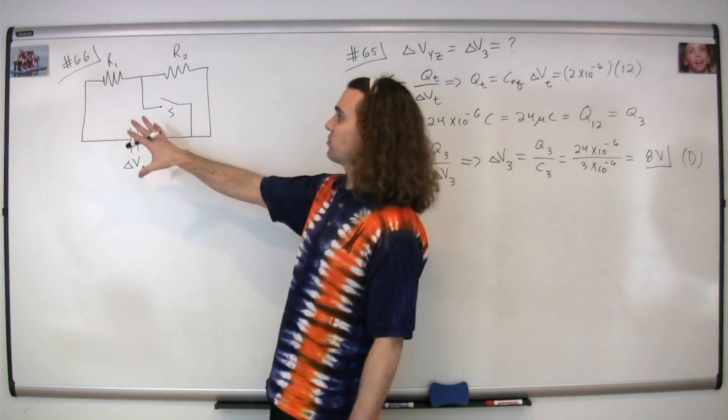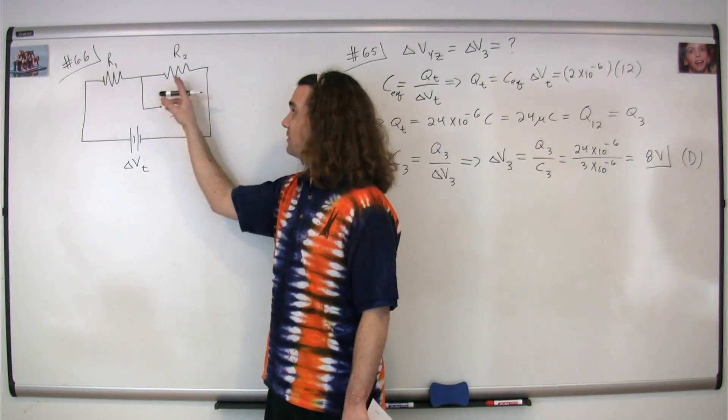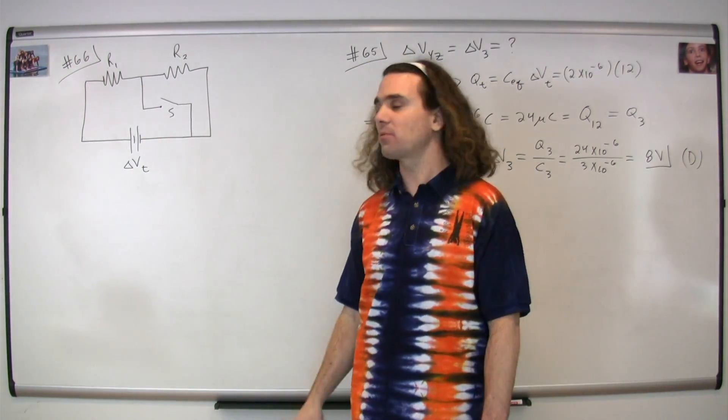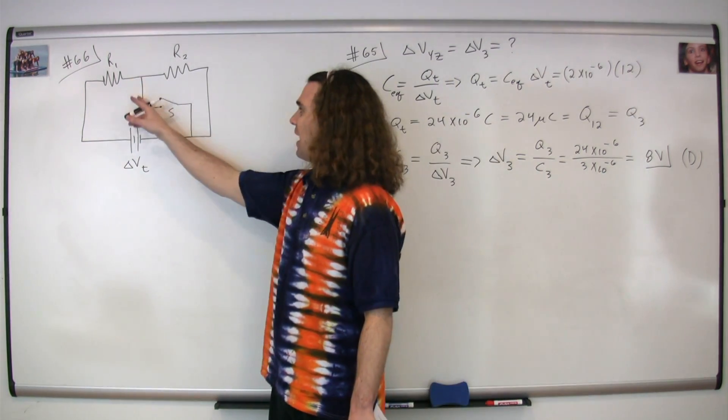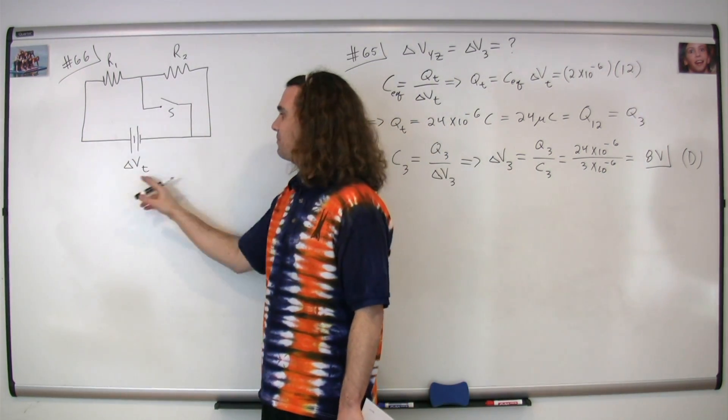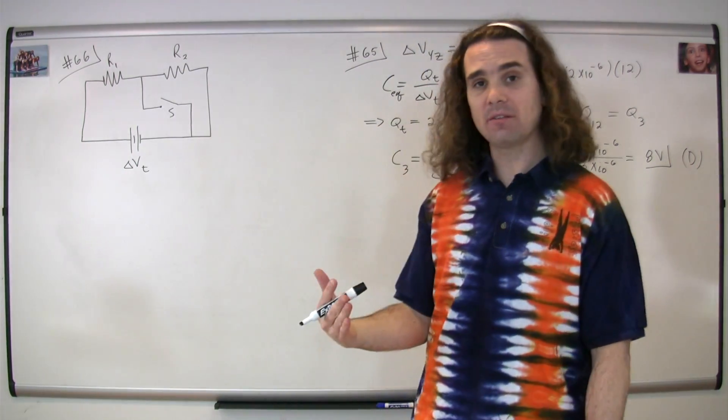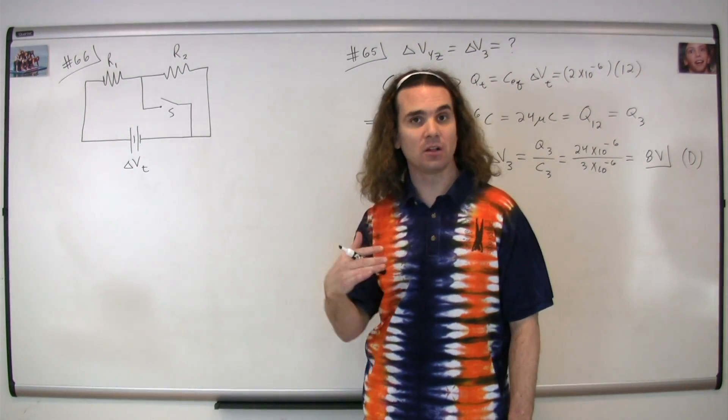Question number 66, we have a circuit diagram with two light bulbs in it. I've represented them with resistors because a light bulb is a specific type of resistor. And we have a switch here and a power supply. The question is what happens to the brightness of these light bulbs when the switch is closed?